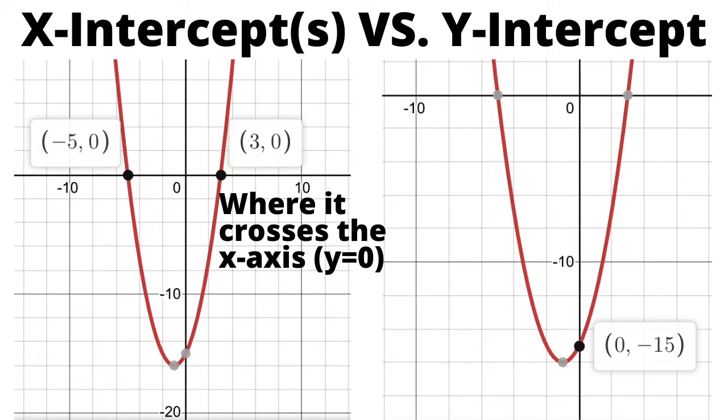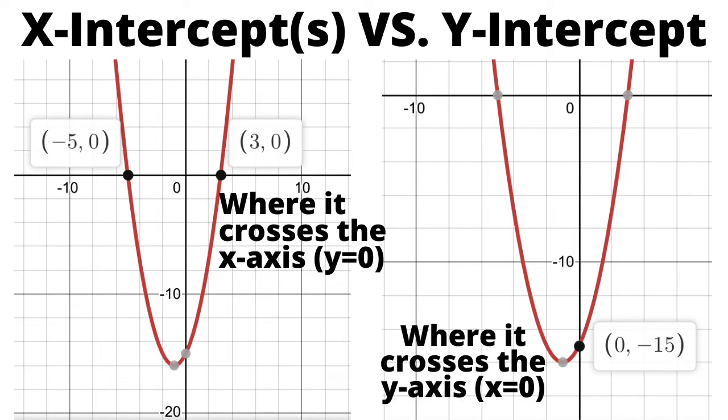With y-intercept, it's just going to be the opposite of that. It's not going left or right at all, it's only going up or down, so that means our x would have to be 0.